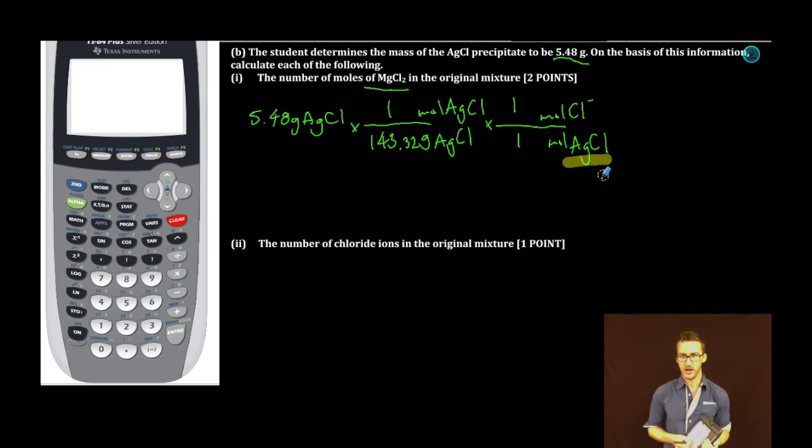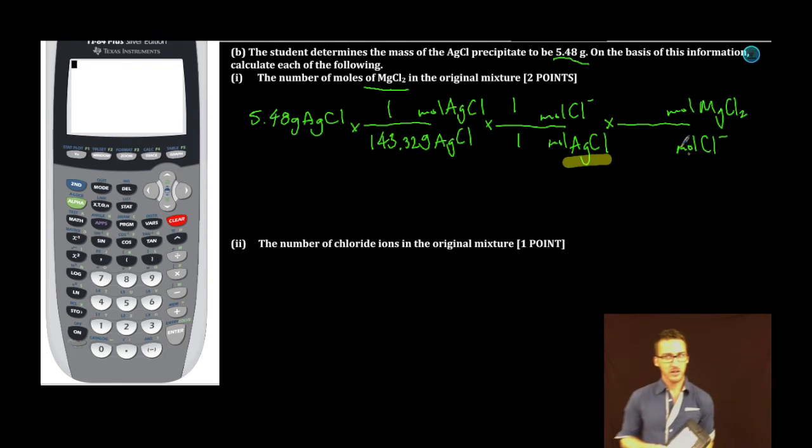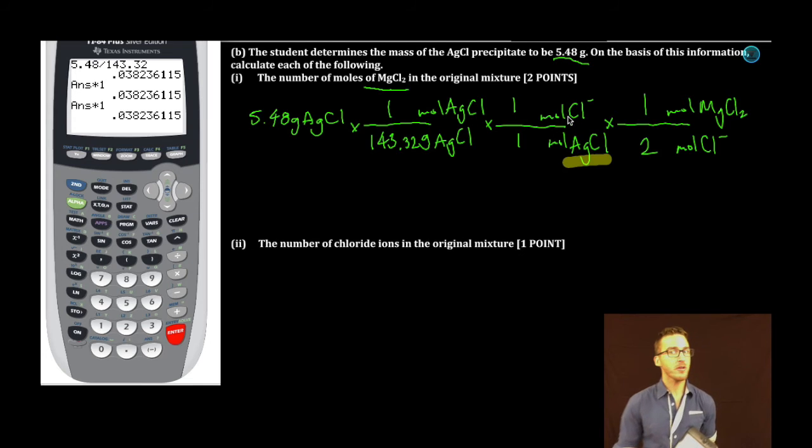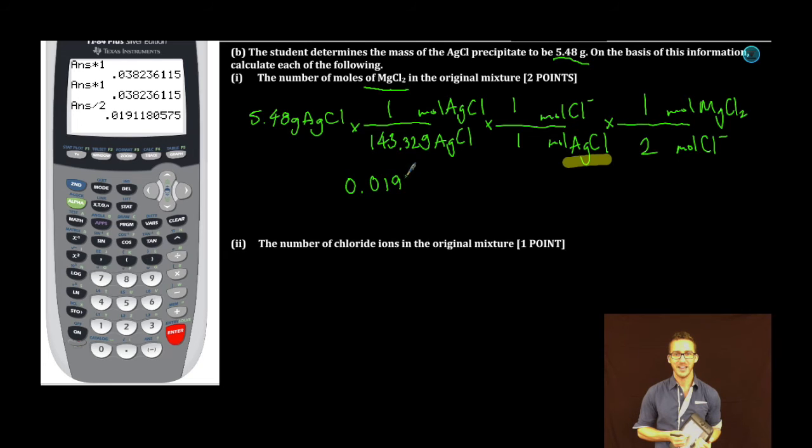In other words, if I know my moles of AgCl, I also know my moles of chloride ions. And then my final step here, all of those chloride ions must have come from the magnesium chloride. For every one mole of magnesium chloride, there are two moles of chloride ions. Head to the calculator. This is my number of moles of silver chloride, same number of moles of chloride ions. This is my number of moles of magnesium chloride in the original mixture. I'm going to need three sig figs, which is where I get 0.0191 moles of MgCl2.